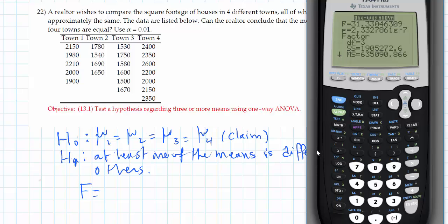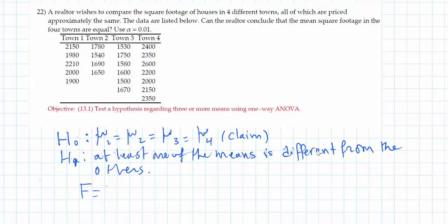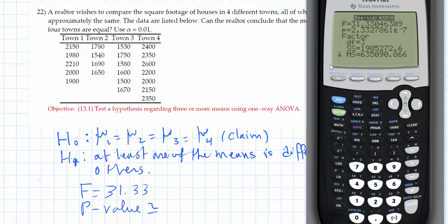The p-value, as you can see on the calculator, is 2.332786 × 10⁻⁷. The 'E negative 7' means you move the decimal point seven digits to the left, so the p-value is almost zero.